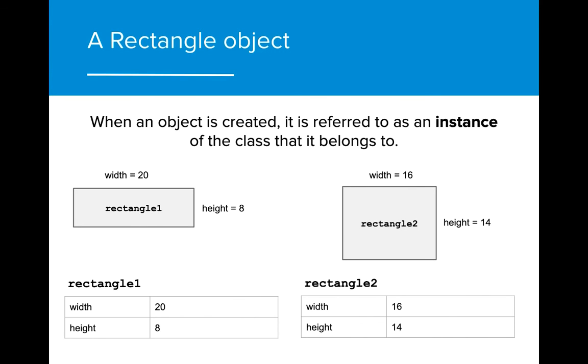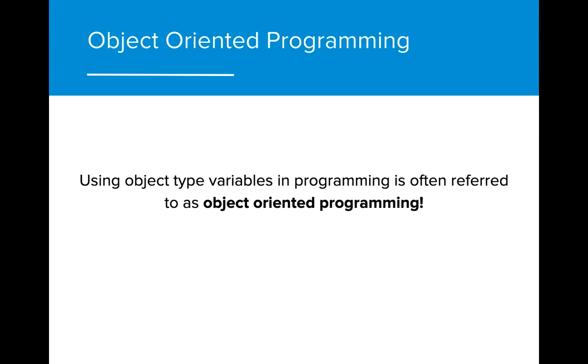We refer to objects as instances of the class that they belong to, because they are each a separate entity from other objects of the same class. The use of objects in programming is referred to as object-oriented programming. We will continue to learn more about the principles of object-oriented programming throughout the course.